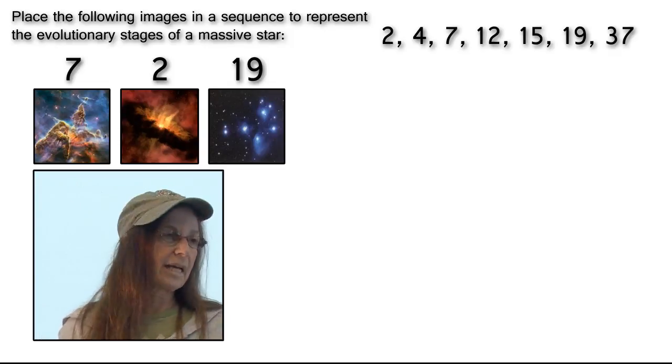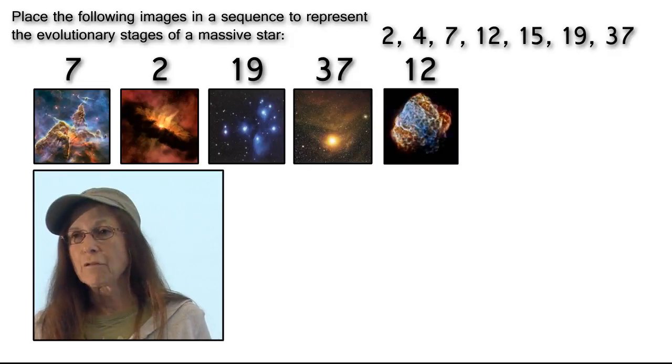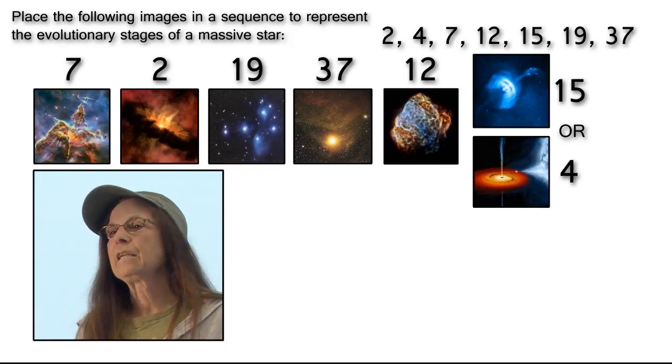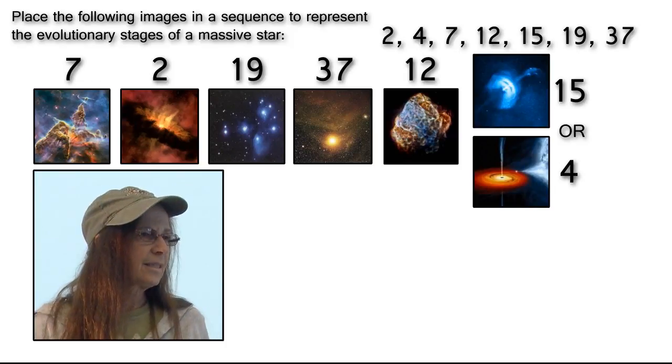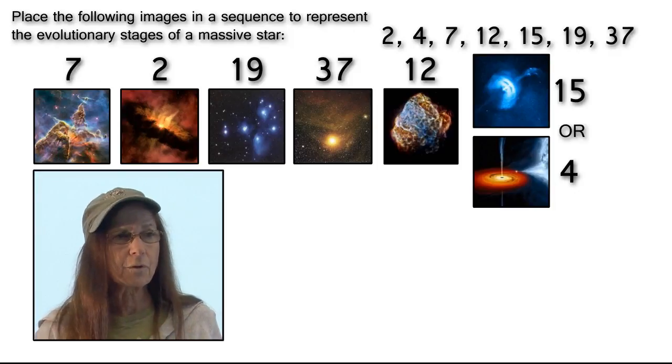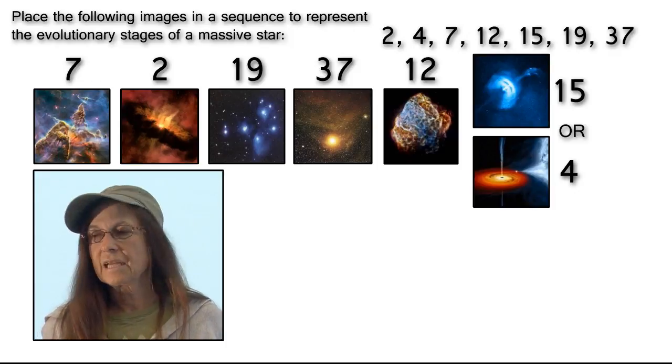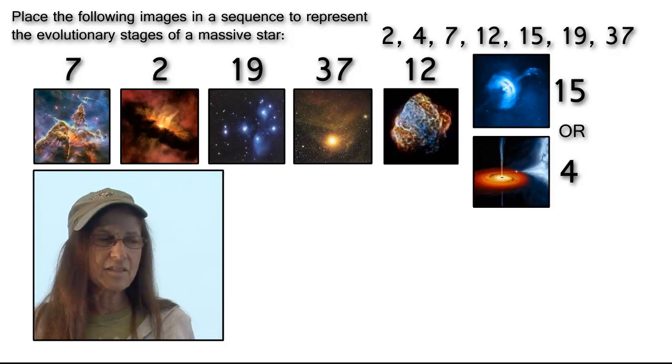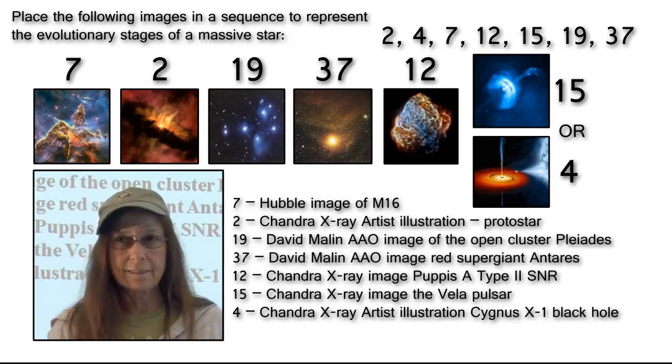So, then I have 19, 37, 12, 15, or 4. Now, this is an example to show you that sometimes these images can be placed on top of or on the bottom of each other. They can be arranged in a circle. There are several different ways that you can arrange these images.